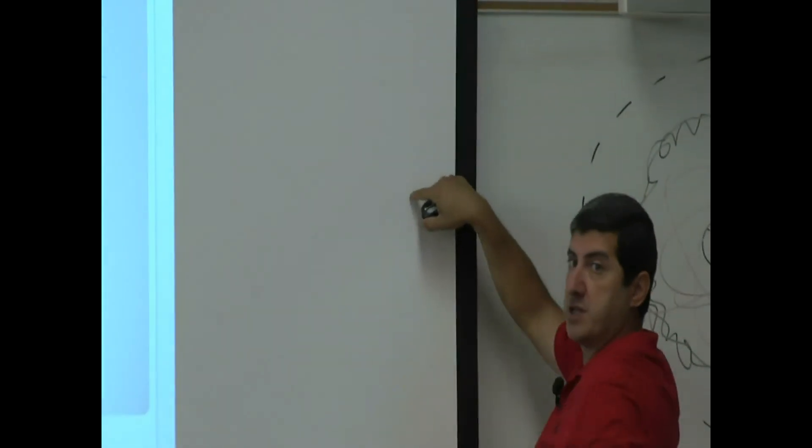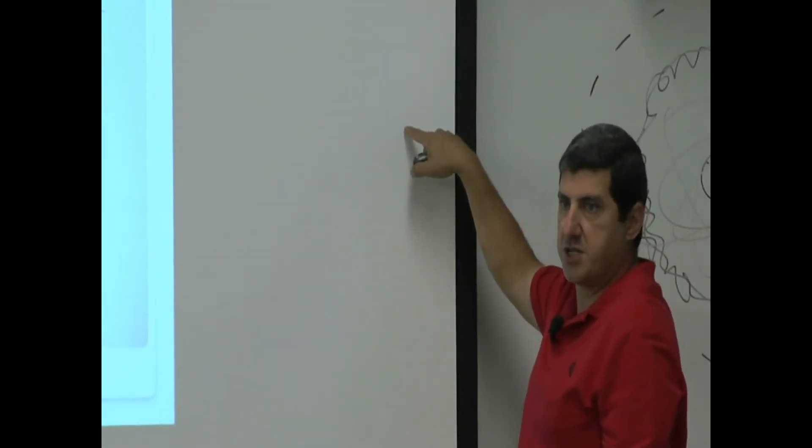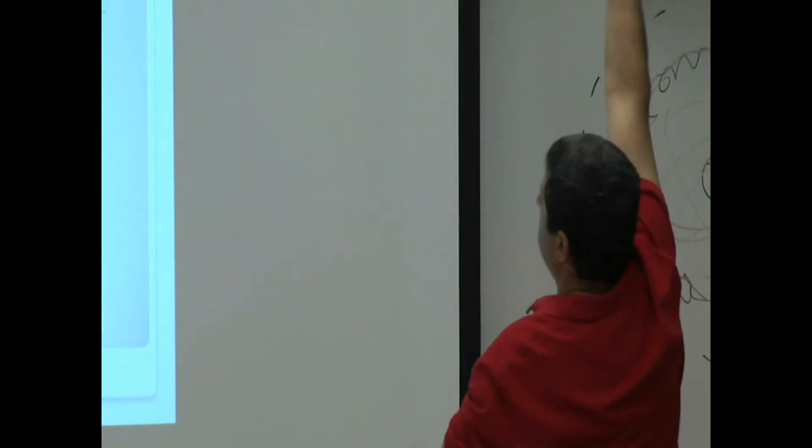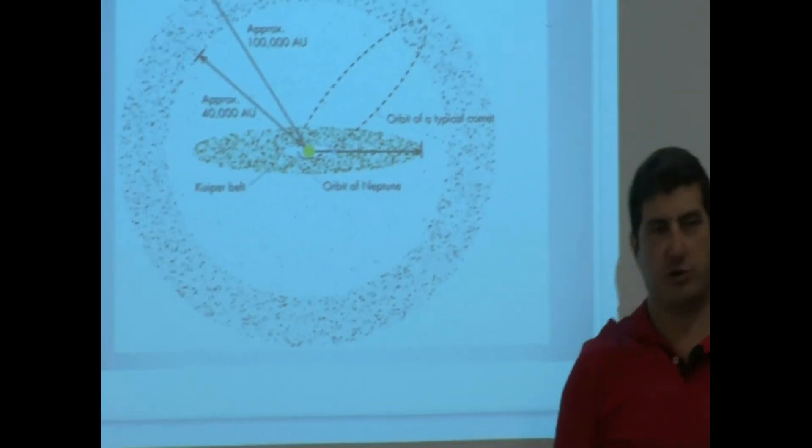This is our closest star. So that gives you a visual. Our closest star is here, and other stars are all the way here. So the Milky Way galaxy in this picture doesn't even fit. It's huge. So this is only showing you our background before you even get to our closest star.